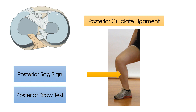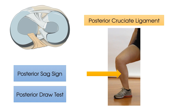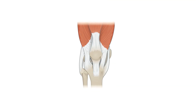Top tip: always look out for your posterior sag sign. If you don't, you may think you have found an ACL tear, thinking that the excess movement on your anterior draw test is from bringing the tibia from a neutral position to an excessively anterior position, when actually you have a positive PCL tear and the excess movement comes from the anterior drawing of the tibia from the posterior sag position to the neutral position.